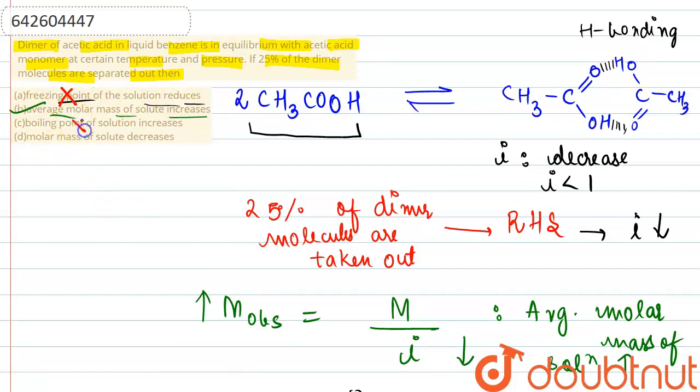Similarly, boiling point is also not being changed because the overall change is changing there. And this last one is saying molar mass of the solute is decreasing. This is also wrong because molar mass of the solute is increasing because of the dimer that we can see over here.